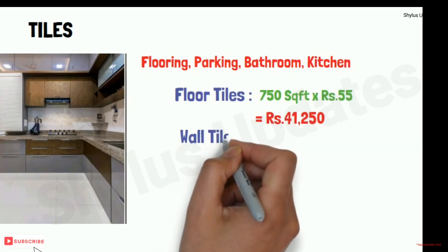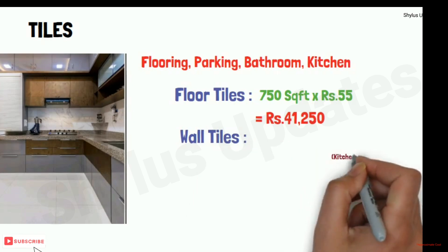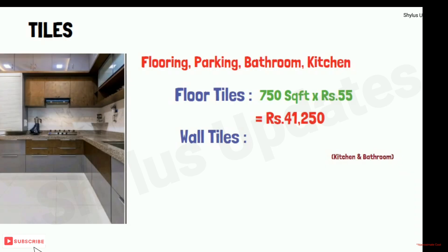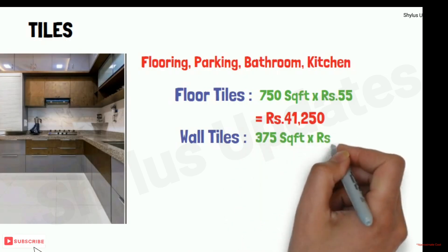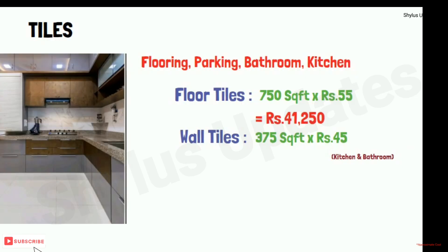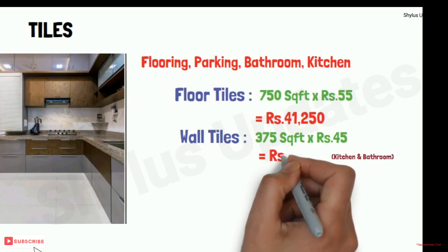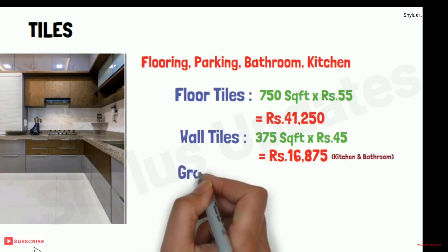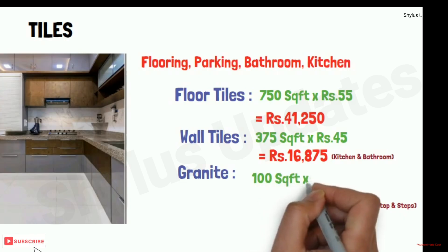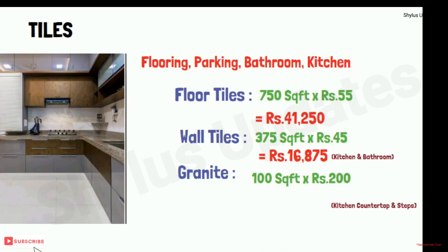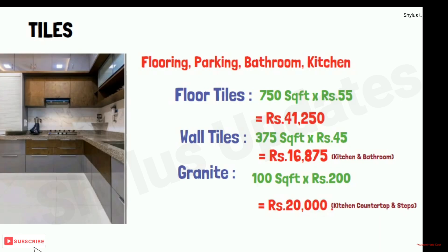Wall tiles are used in kitchen and bathroom. Wall tiles are required for 375 square feet. The current market rate of a wall tile is rupees 45 per square feet. When you multiply 375 square feet into rupees 45, you get rupees 16,875. Granites are used in kitchen countertop and in steps. Granites are required for 100 square feet. The current market rate of granite is rupees 200 per square feet. When you multiply 100 square feet into rupees 200, you get rupees 20,000.